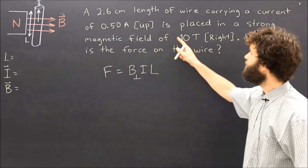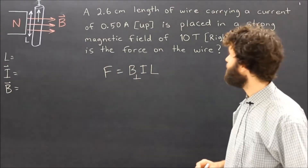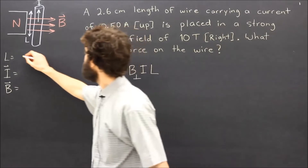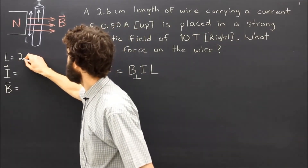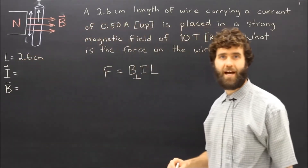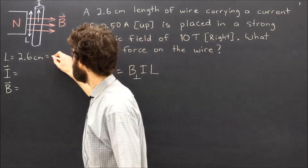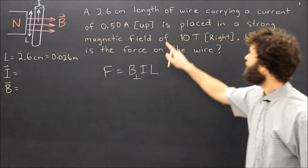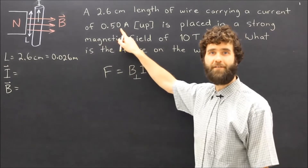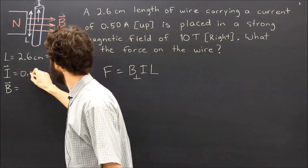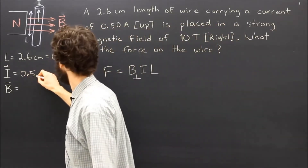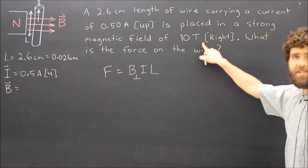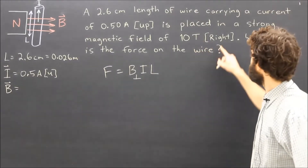Here we can look at our problem and determine the value for our variables. A 2.6 centimeter length of wire — we write that down as 2.6 centimeters and convert that into SI base units of meters. The current in the wire is 0.5 amperes up, and finally this strong magnetic field is 10 tesla and it's to the right.